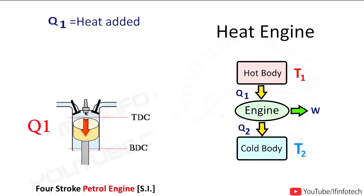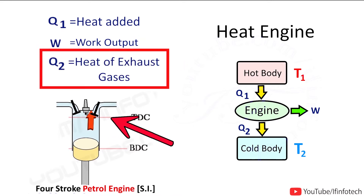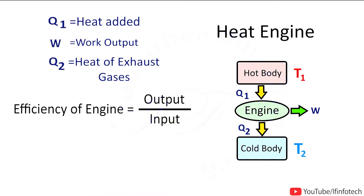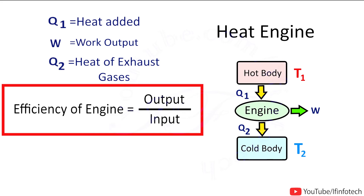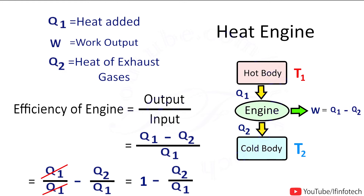In a heat engine, Q1 is the amount of heat added to the system — we burn fuel to produce thermal energy to perform useful work, which is the net work done by the engine. Q2 is the amount of heat rejected, i.e. heat of exhaust gases out of the engine cylinder. The efficiency of the engine is output upon input: net work done upon heat added. Therefore the formula is (Q1 - Q2) / Q1, which simplifies to 1 - Q2/Q1.